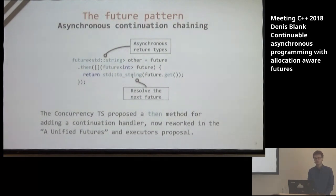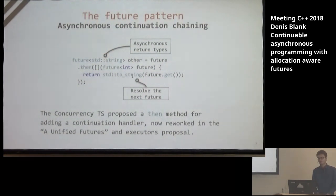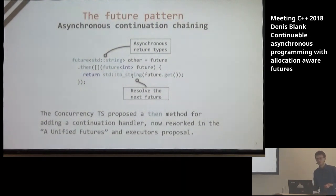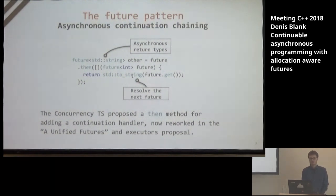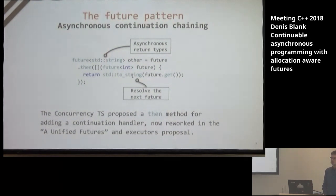Future implementations usually feature another way of waiting: it's called the future.then method. future.then accepts a callback which accepts the future again, and it will be called as soon as the future becomes ready. If the future is already ready when the handler is chained through then, future.then will call the callback immediately. This was proposed in the Concurrency CTS, but it's been heavily reworked in the unified futures and executor proposal — we likely can't get it until C++23.